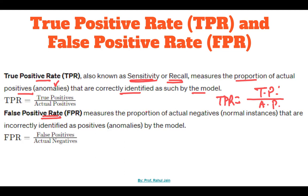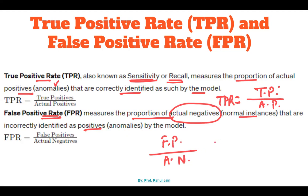False positive rate measures the proportion of actual negatives — normal instances — that are incorrectly identified as positive by the model: false positives divided by actual negatives. For example, in medicine, if a patient is predicted to have a disease but originally that person is completely healthy, that is a false positive. The model is predicting that person has some kind of disease when they do not.